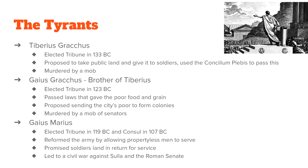This led to three tyrants — and remember, tyrant is not necessarily a bad thing; it just means somebody who took power not through the normal process. The first was Tiberius Gracchus, elected tribune in 133 BC. He proposed giving public land to soldiers so they could continue to serve, using the Concilium Plebis to pass this law. A bunch of Patricians and senators disliked it, and Tiberius Gracchus was murdered by a mob.